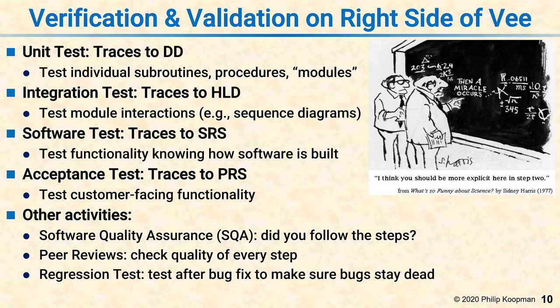The last one you hear about is regression test. Regression test is a specific type of testing, typically at the system level but can be used elsewhere, where you're looking to say: we fixed a bug — did it stay fixed? Or did it come back to life after we made another change? So regression test is a particular type of testing technique used within the context of the V, and it'll show up in the test boxes.